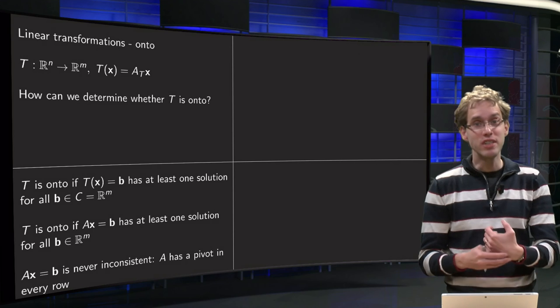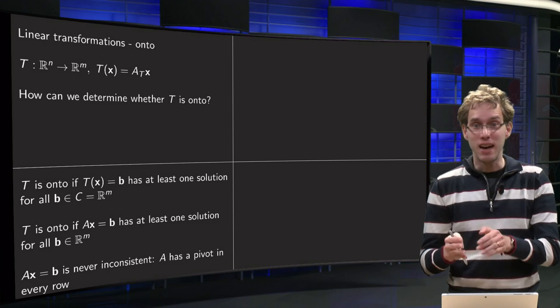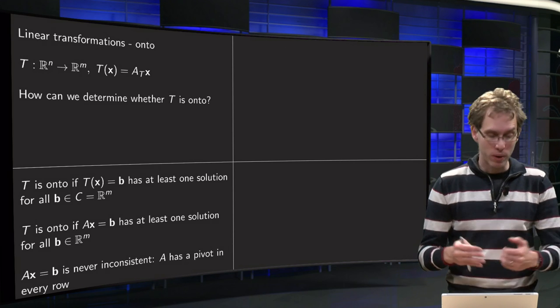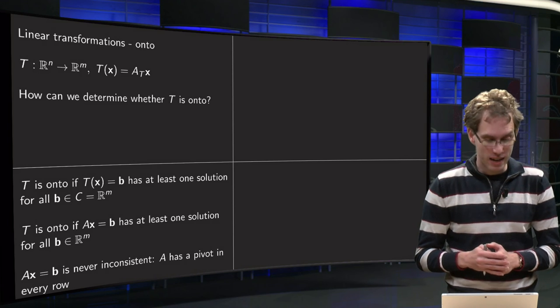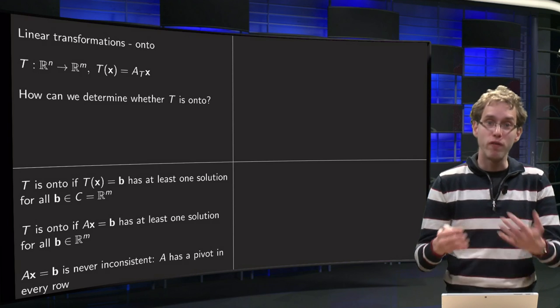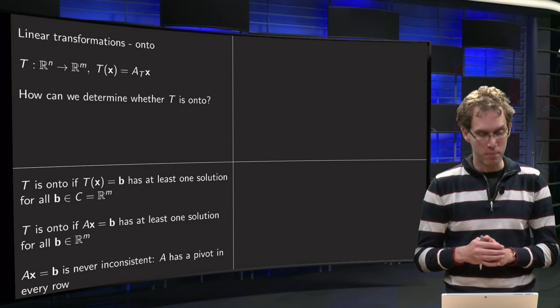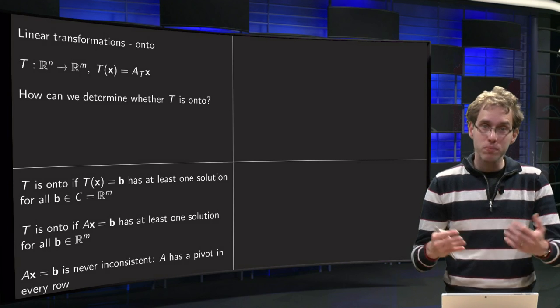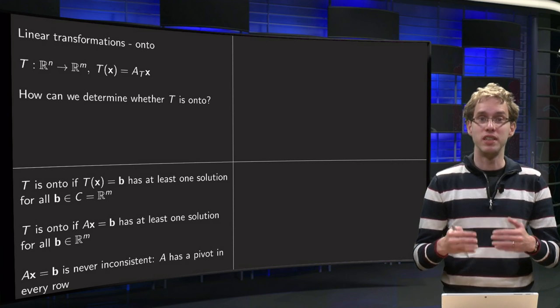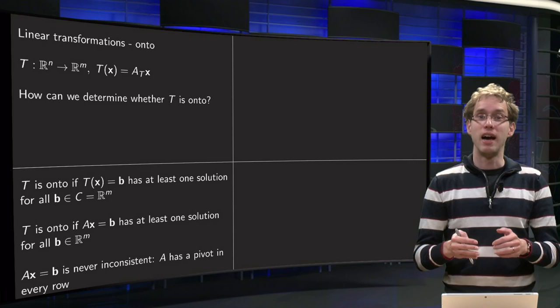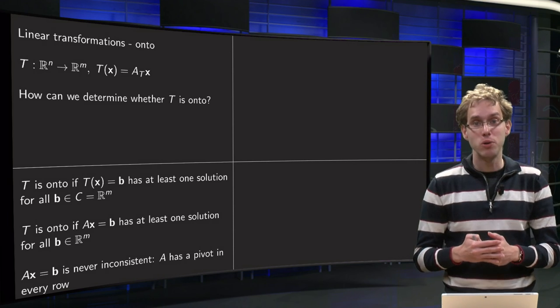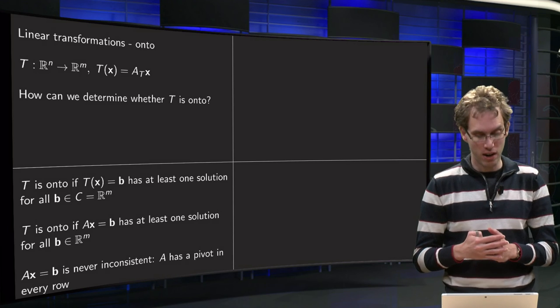Well, we know T(x) equals AT times x, so we wonder whether the equation Ax=b can always be solved for any b in Rᵐ. So we wonder, does the equation Ax equals b have at least one solution for every b in Rᵐ?